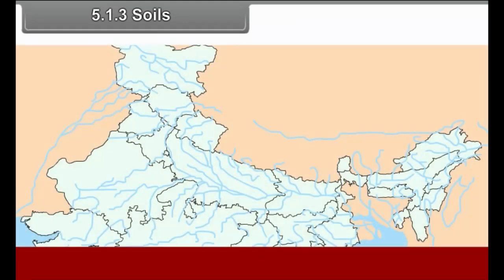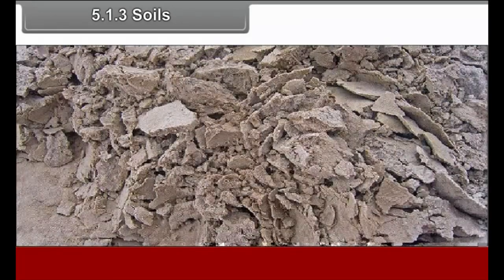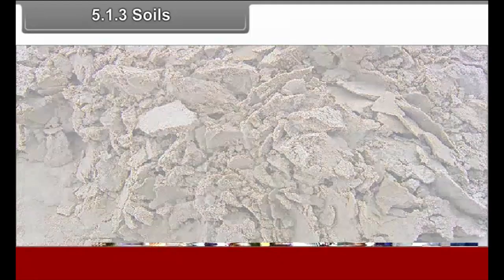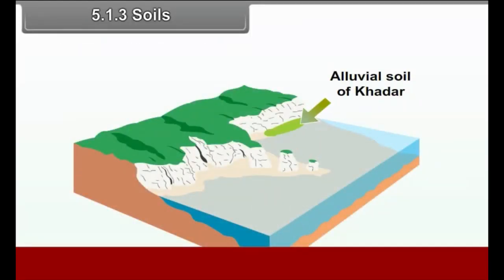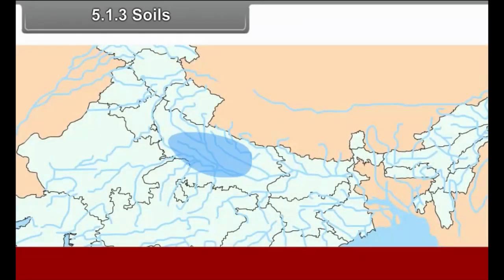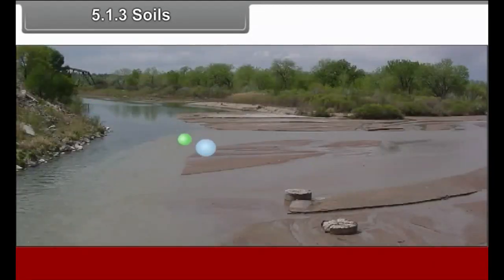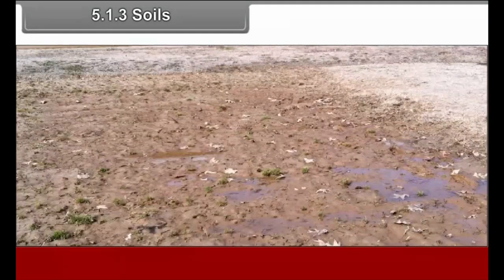5.1.3 Soils. Throughout the region, alluvial soil is found. In the upper Ganga Plains, the Bhabar tract has sand and gravel while the Tarai has sandy clay with humus and moisture. The newer alluvial soils of the Khadar are highly alkaline but lack humus. The older alluvial soils of the Bhangar are mature but lack salt, lime and alkalinity. The middle Ganga Plain has immature alluvial soils. Poor drainage causes accumulation of sodium soils that renders the soil infertile.